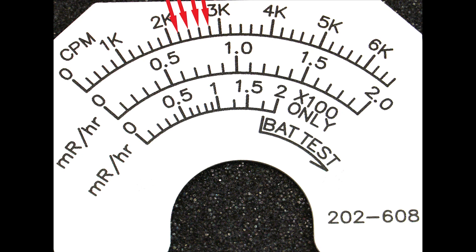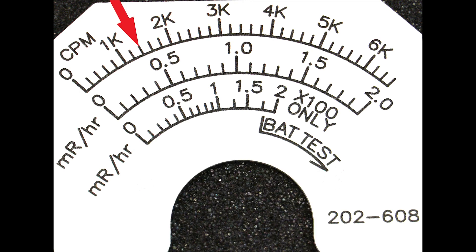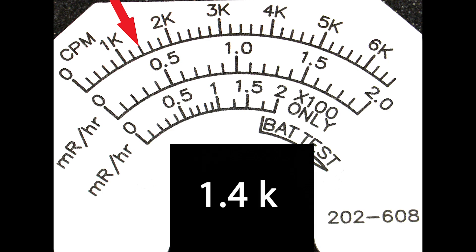In the example here, there are four secondary tick marks between each primary tick mark on the top CPM scale, meaning each secondary tick mark represents 0.2. Therefore, on this scale, the secondary tick mark past 1k indicates 1.4k.